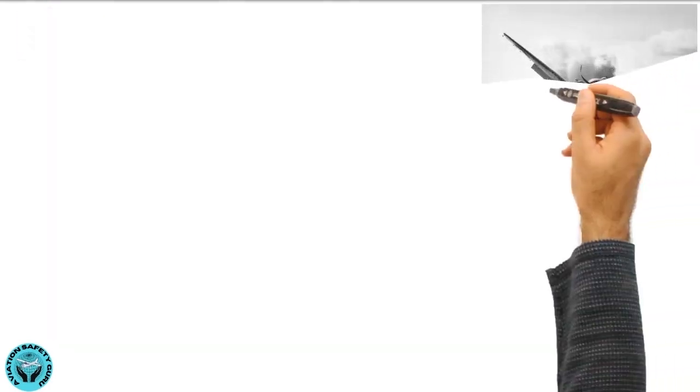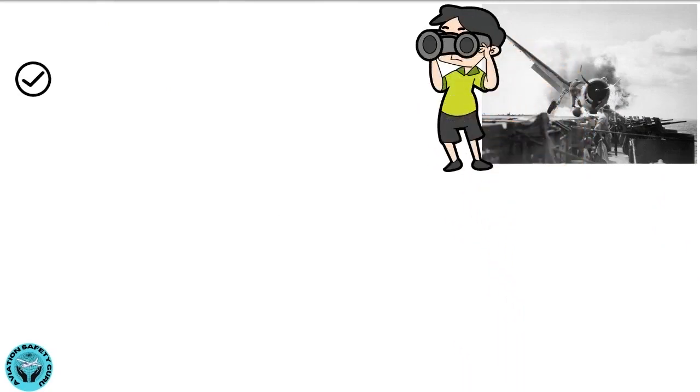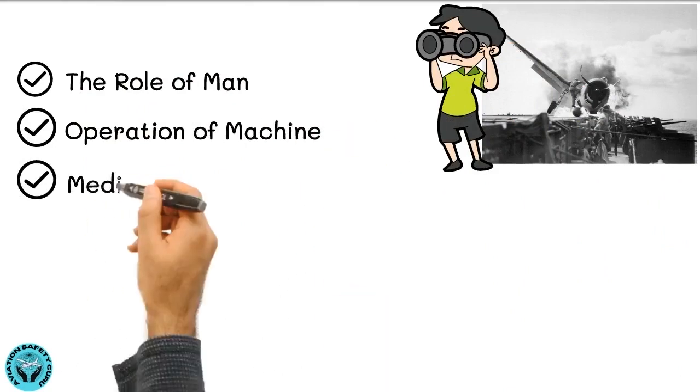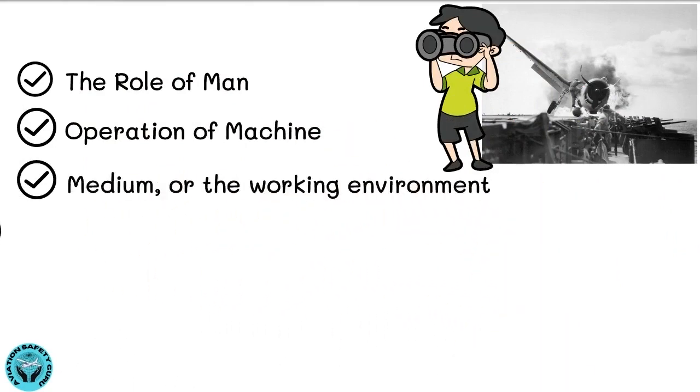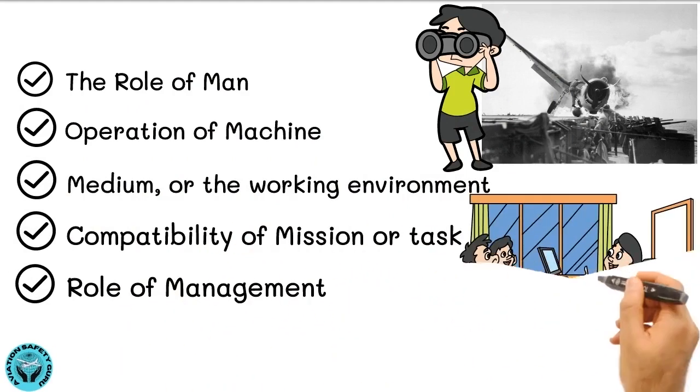Therefore, whenever an accident occurs, the investigators look for deficiencies in the role of man, in operation of machine, in medium or the working environment, or compatibility of mission or task, and the role of management.